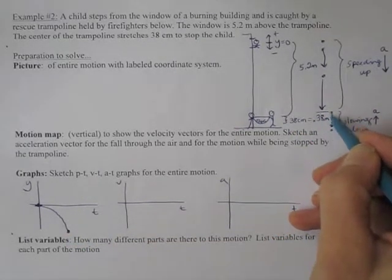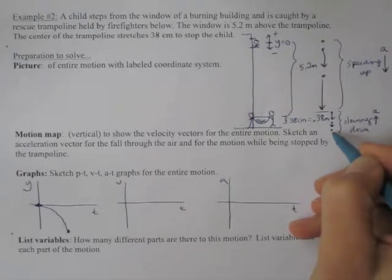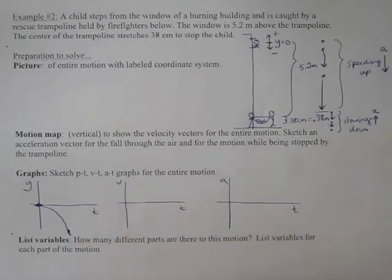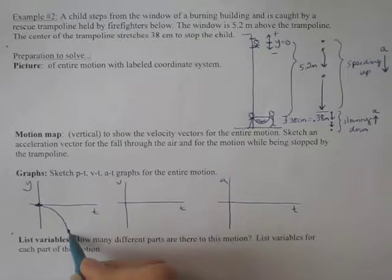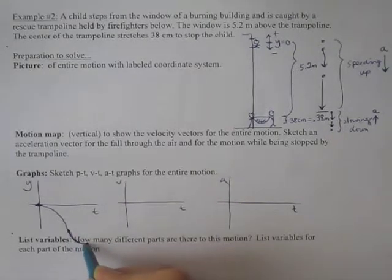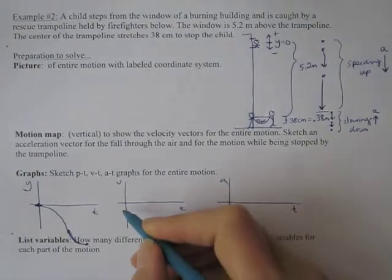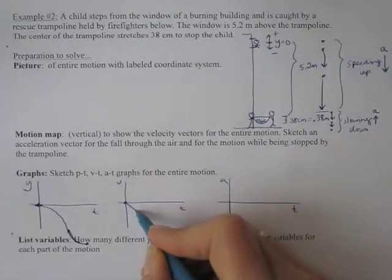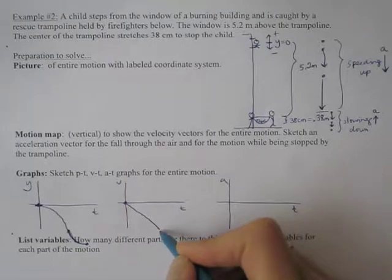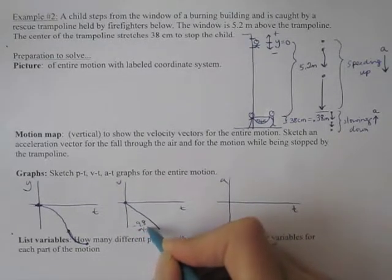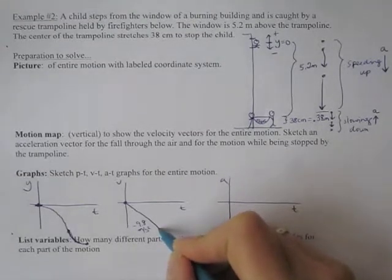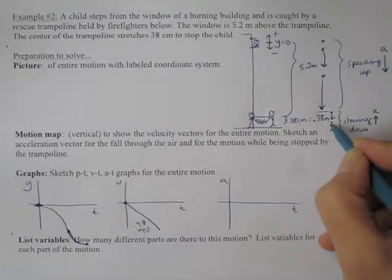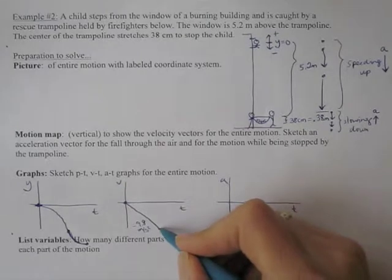This is where the child hits the trampoline. Once the child hits the trampoline, now we have slowing down, but still moving in the negative direction. So slowing down looks like, start out with a negative slope and then go to a 0 slope. So it's going to level out like this. Now the velocity starts at 0, it's going to become very big negative. And the slope of this would be negative 9.8, because that's free fall.